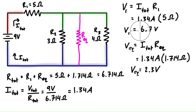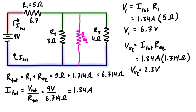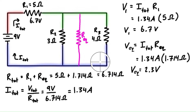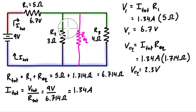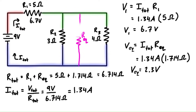The voltage drop from the red node to the green node is 6.7 volts, so let's write that on — 6.7 volts. And then the voltage drop from the green node to the blue node is 2.3 volts. It's the drop across the equivalent resistor, but it's the drop from any point on the green node to any point on the blue node. So we can erase the equivalent resistor and label the voltage drop of both resistors as 2.3 volts and 2.3 volts.